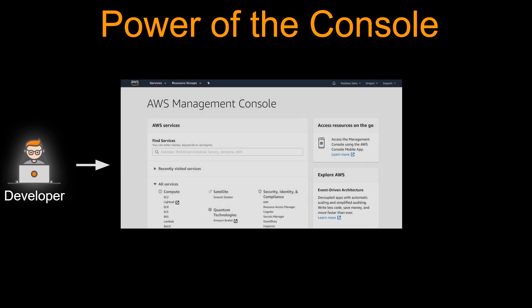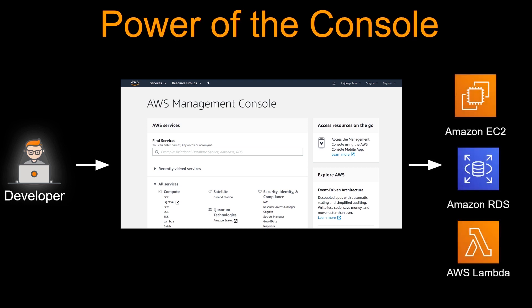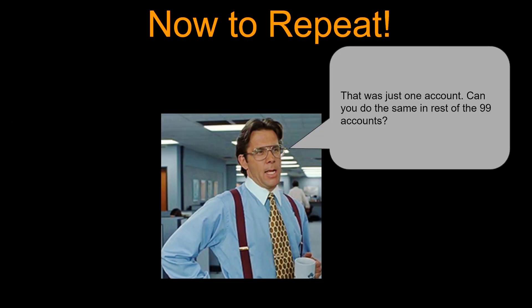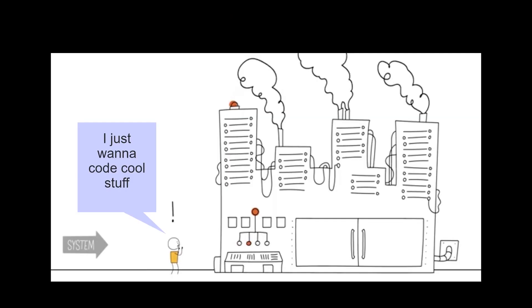An almighty developer logs into the AWS management console in one of their accounts and starts spinning up AWS infrastructure like EC2, RDS, Lambda — and that was pretty powerful. The developer was feeling good until the boss said, hey, that was just one account. Can you spin up the same infrastructure in the rest of the 99 accounts? So that is pretty painful to log into the console for all the accounts in an enterprise and spin up all the stuff manually. And also it is very easy to mess something up in the console — if you forget to click something or forget to select the right option from the drop-down, your infrastructure could be messed up.